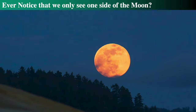Did you ever notice that we only ever see one side of the Moon? The Moon's period of rotation equals its period of revolution around the Earth. The rotation of an object is something that spins about on an axis that points down through it, and the revolution is the orbiting of one object around another — here the Moon around the Earth. It's really interesting that the Moon rotates with the same speed at which it revolves.